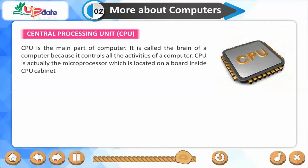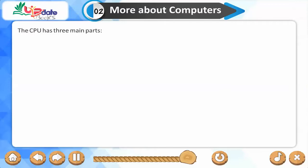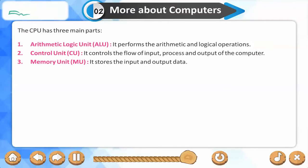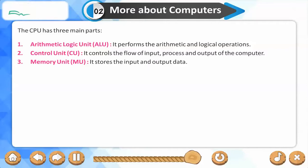The CPU is the main part of the computer, called the brain of a computer because it controls all its activities. CPU is actually the microprocessor located on a board inside the CPU cabinet. The CPU has three main parts: the Arithmetic Logic Unit (ALU), which performs arithmetic and logical operations; the Control Unit (CU), which controls the flow of input, process, and output; and the Memory Unit (MU), which stores input and output data.